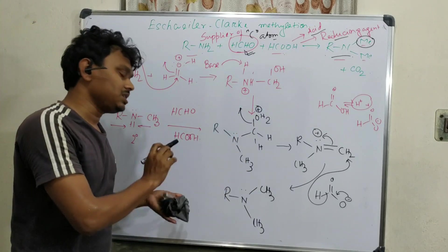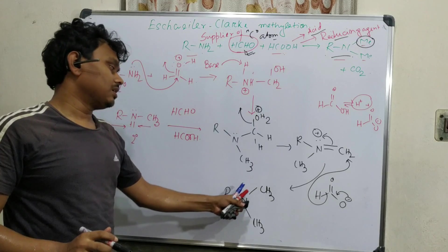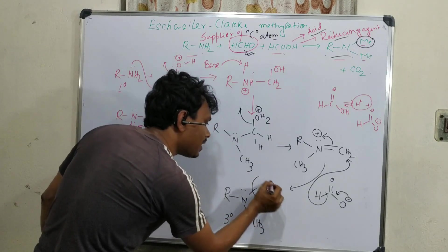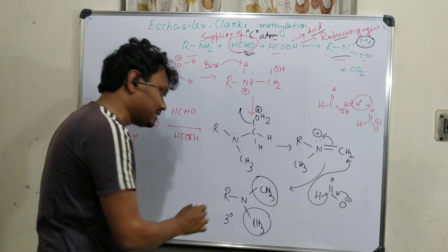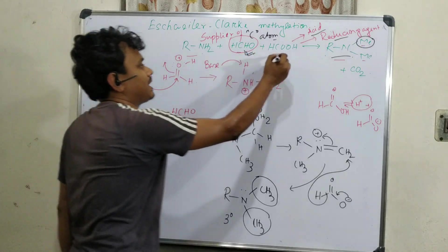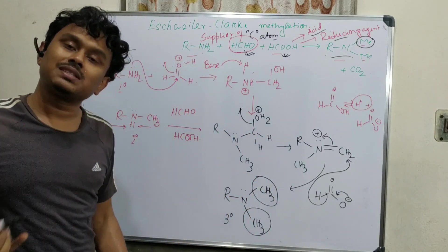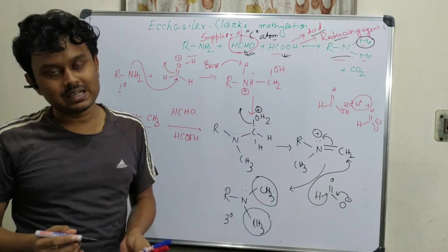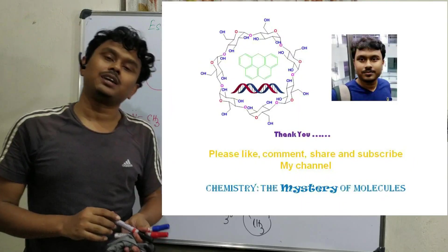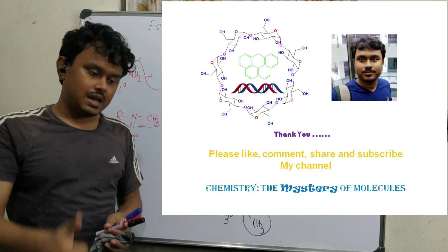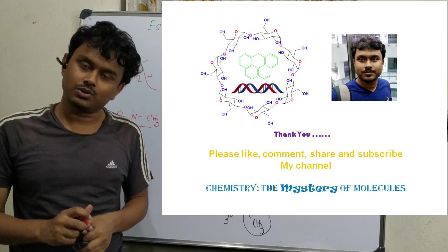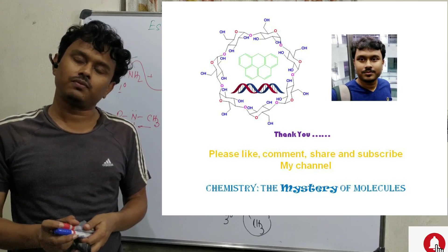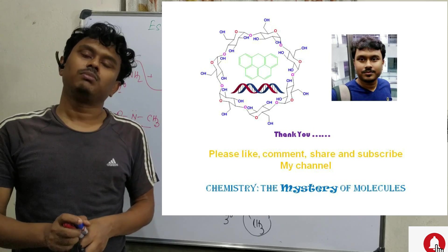So this is our final product. This is the Eschweiler-Clarke Methylation — a strategy to prepare a tertiary, i.e., 3rd degree amine where specifically two methyl groups are attached. We learned that formic acid acts as both an acid and a reducing agent, because it undergoes decomposition to produce carbon dioxide and hydride, with the hydride acting as the reducing agent. If you like my teaching, please give a like, subscribe to the channel Chemistry and History of Molecules, share this video, and press the bell icon for notifications.